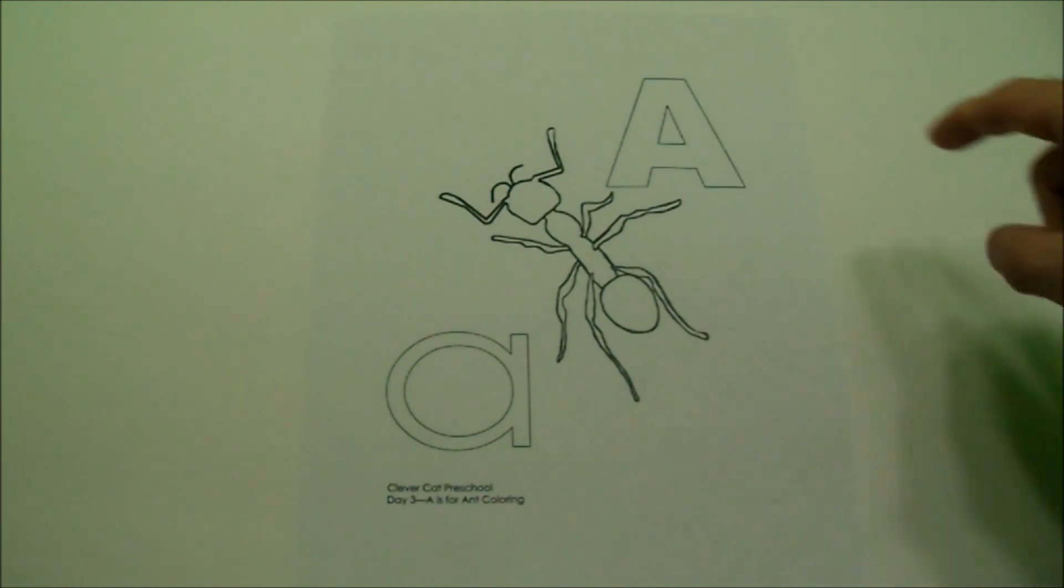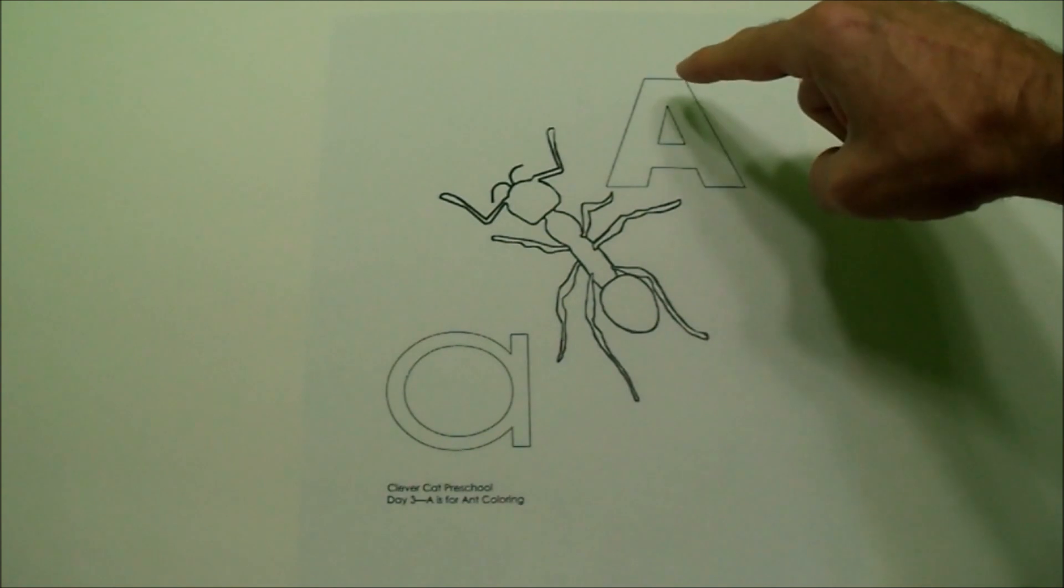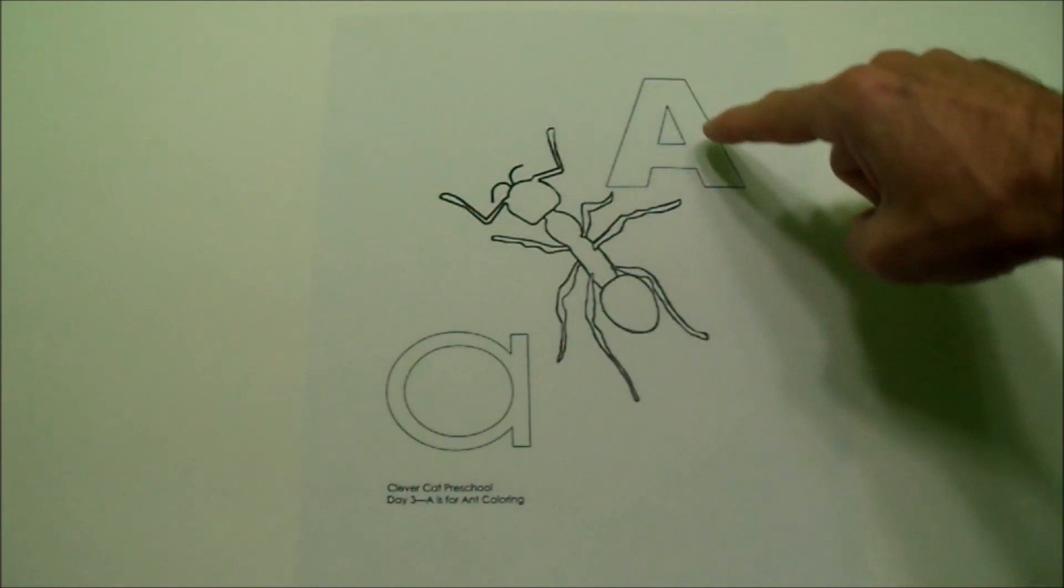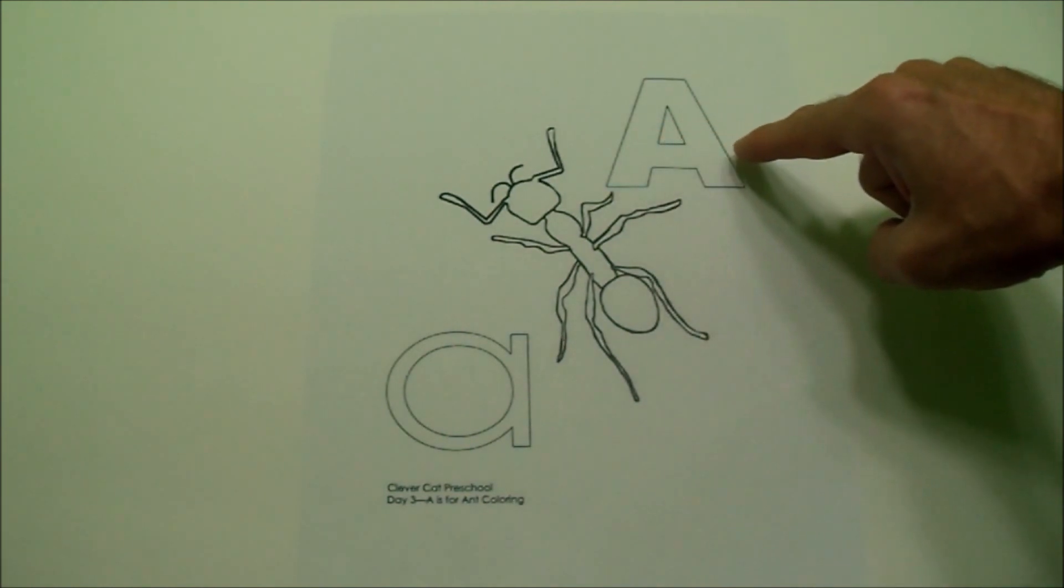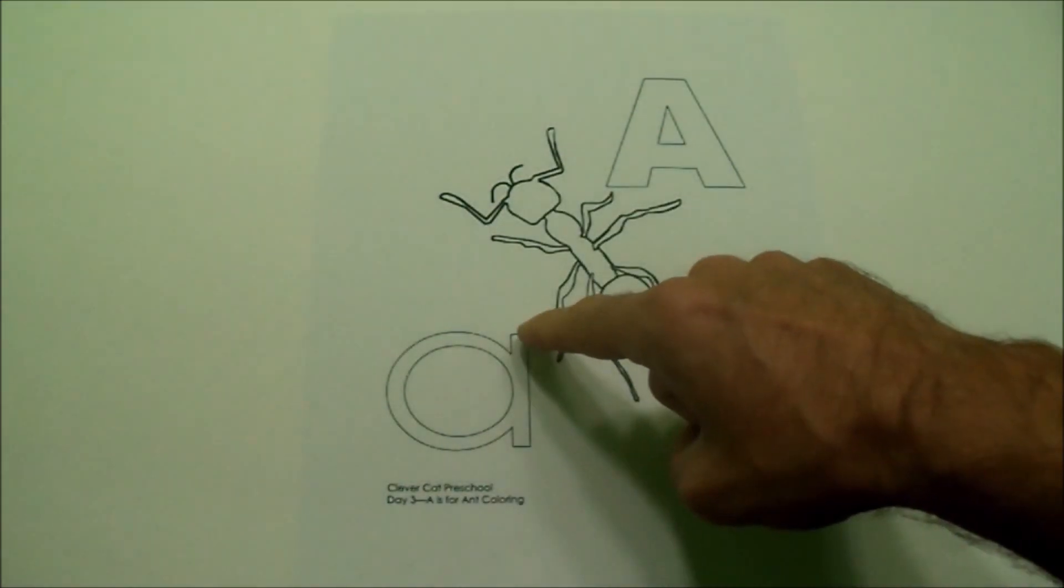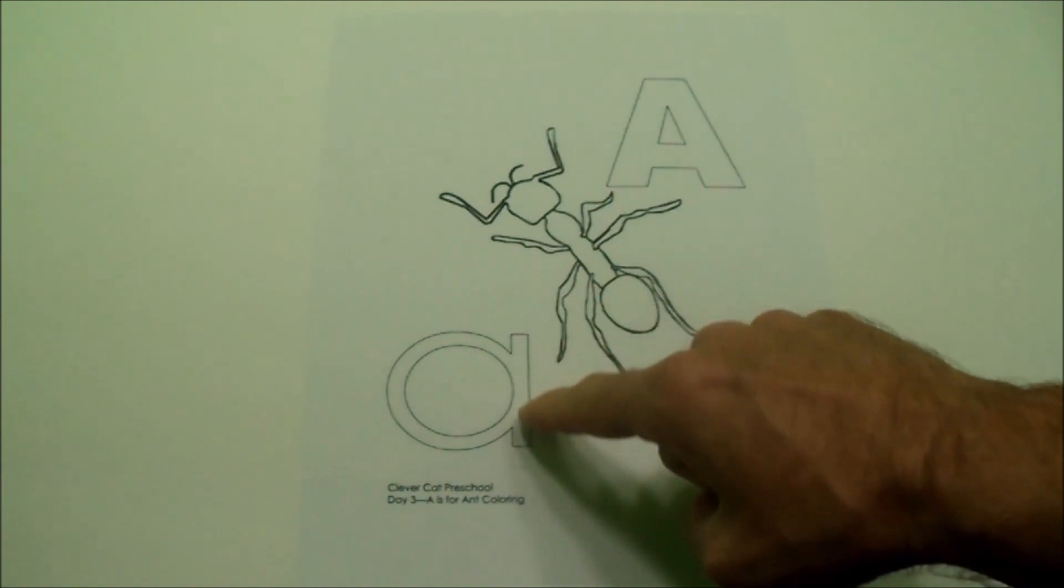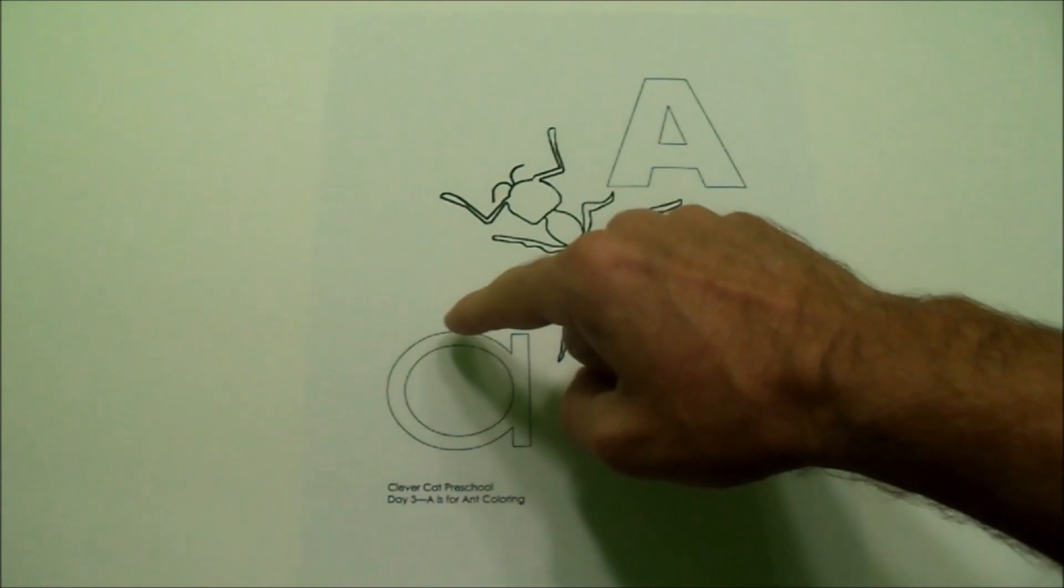Do you remember how to make a big A? Start at the top and go down. Come back to the top and go down. Go to the left and come across to the right. For a little A, start at the top and go down. Then we come back up and go around.